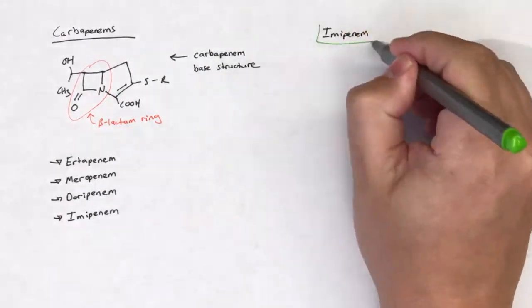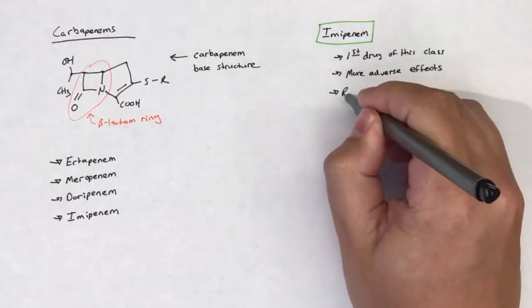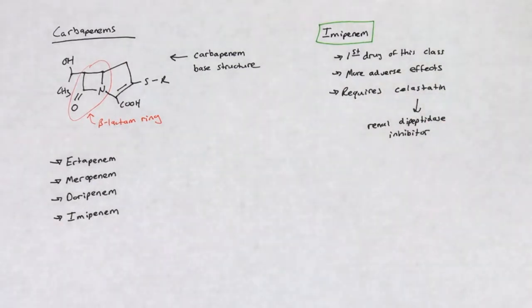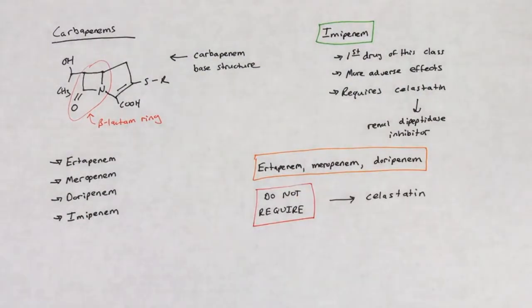Imipenem was the first drug of this class. This is of importance because imipenem tends to have more adverse effects than the other carbapenems. In addition, imipenem requires combination with a renal dipeptidase inhibitor, cilastatin, in order to maintain clinically relevant concentrations within the body. The other carbapenems do not require this.